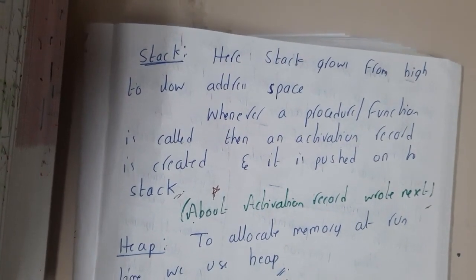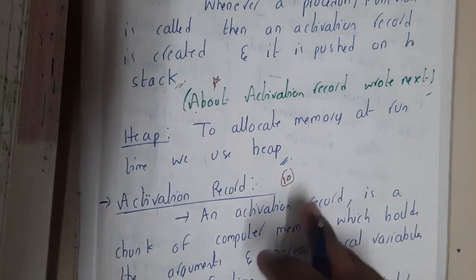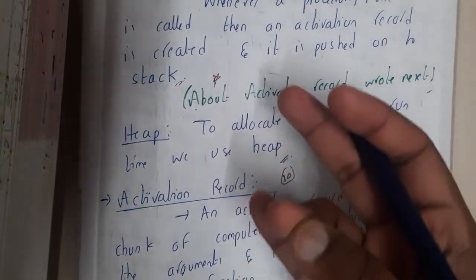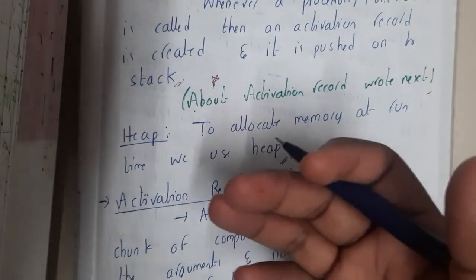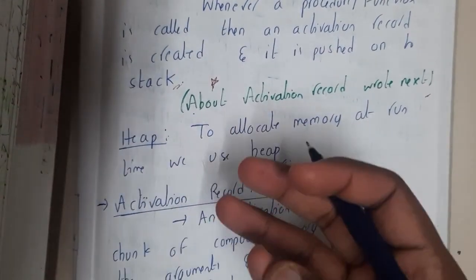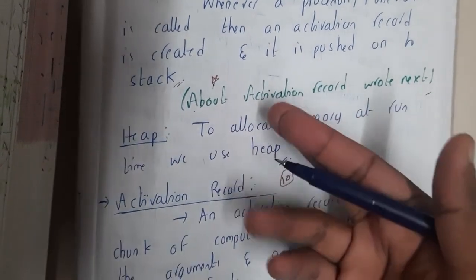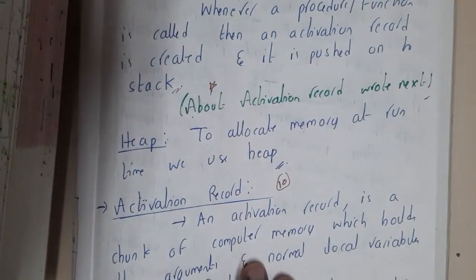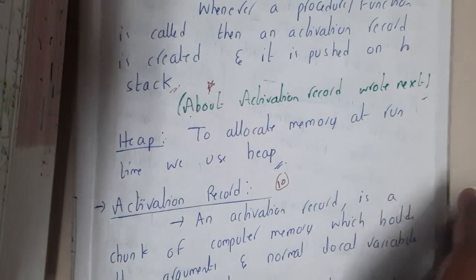The heap is used to allocate data at runtime. We use functions like malloc, calloc, realloc, delete, free, and new — available in C and Java — for heap allocation.